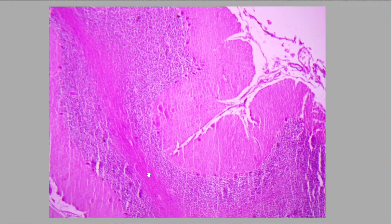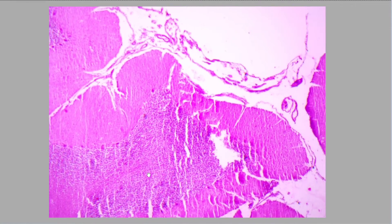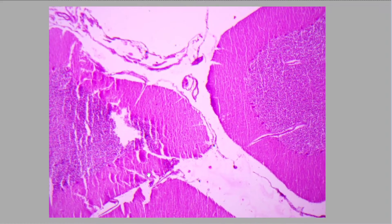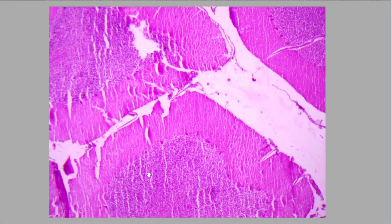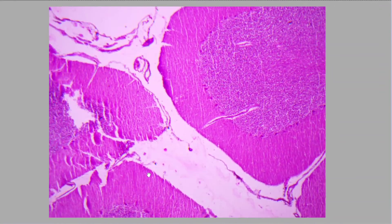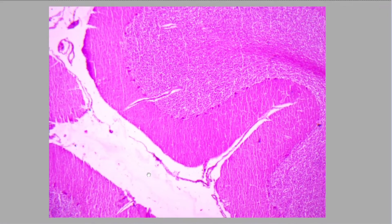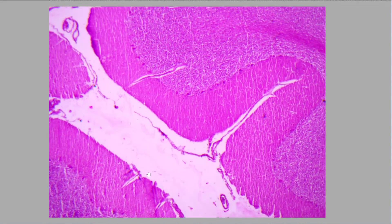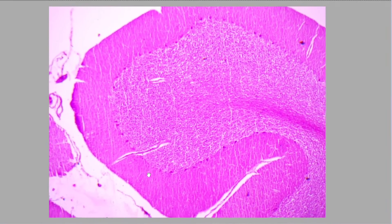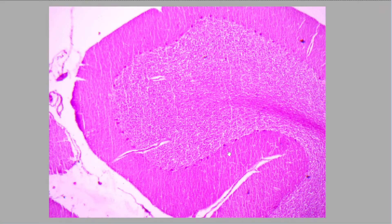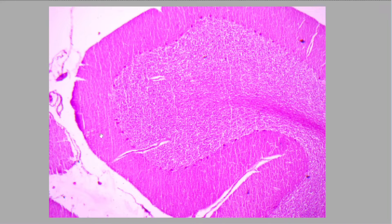When you have the cerebrum, the folds are known as sulci and gyri. But in the case of the cerebellum, they are larger and they are known as folia. You can see that these are the projections, and in between the projections, these depressions are present between the adjacent two folia.